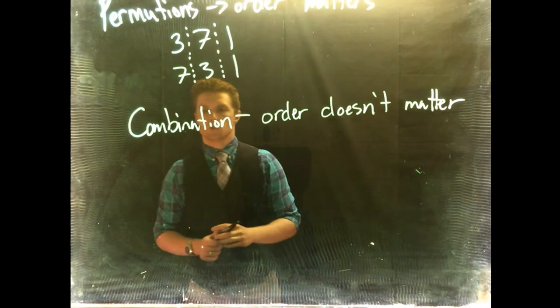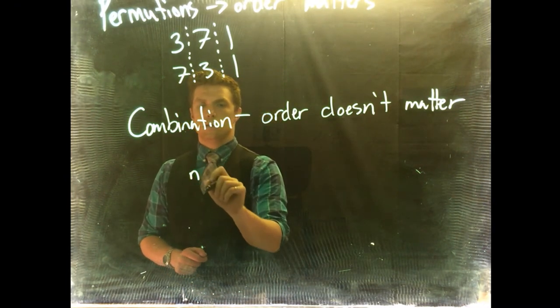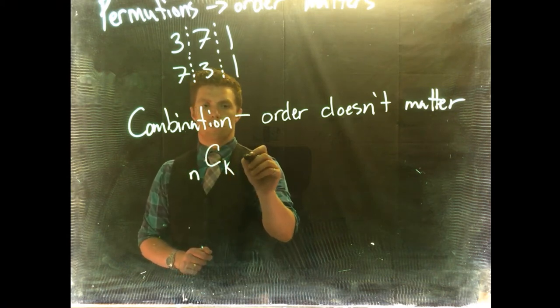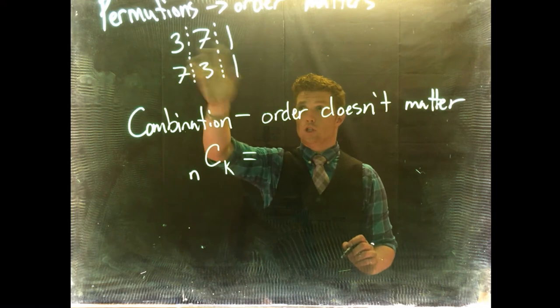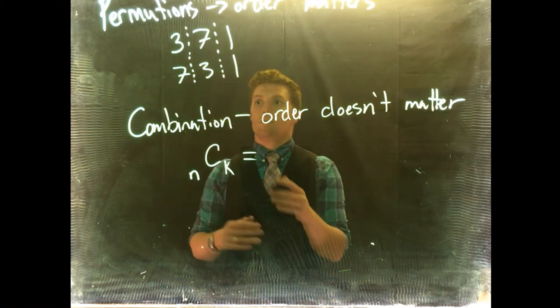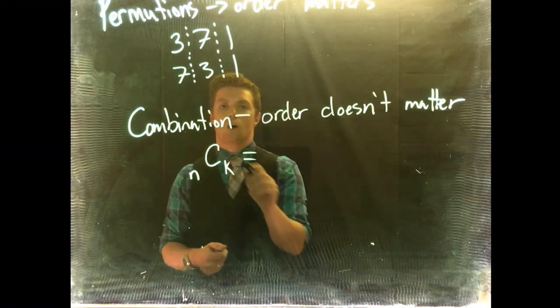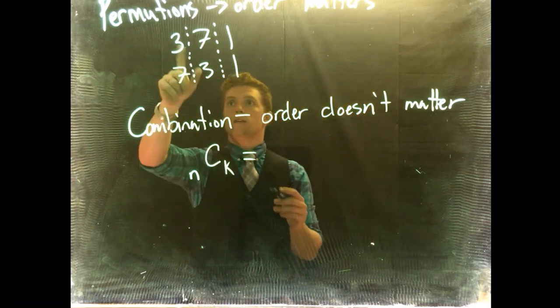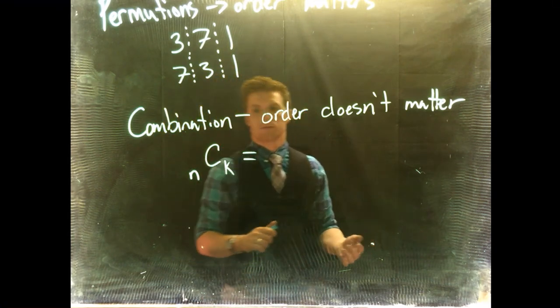Combinations, order doesn't matter. Then we've got a different equation. In our combination, we've got n possible outcomes selected k at a time. We can do our combination lock here and we could see, well, how many possible combinations of these numbers are there? Instead of permutations, we know combinations, order doesn't matter, so 3-7-1 and 7-3-1 would be seen as the same thing.